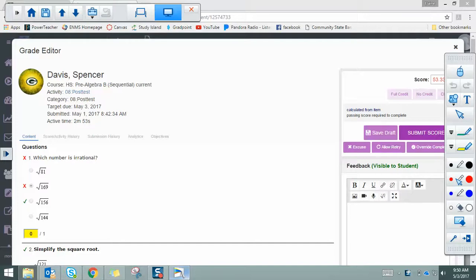But when you get to square roots, you have to pick the square root that is not a perfect square. So 9 times 9 is 81, 13 times 13 is 169, and 12 times 12 is 144. So those all actually end up being rational numbers because they are what we call perfect squares.